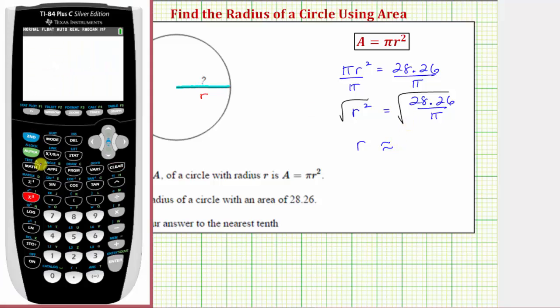So we press second x squared to get the square root. And notice how the entire fraction is under the square root. So under the square root we have 28.26 divided by, for pi we press second, then the exponent key here or the caret, and then right arrow to exit the square root, and then enter.